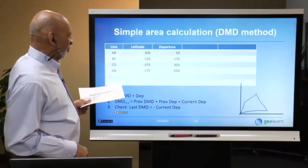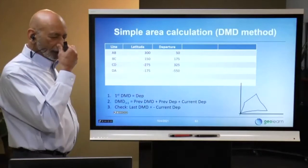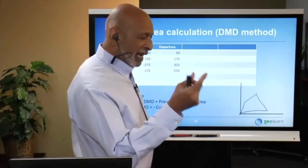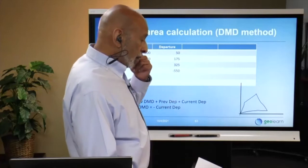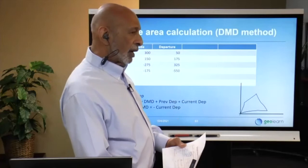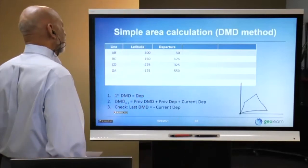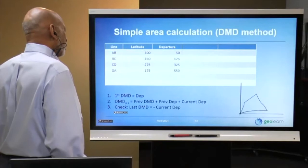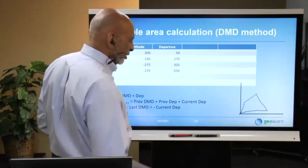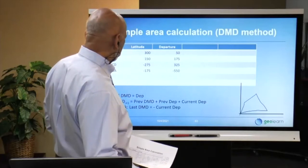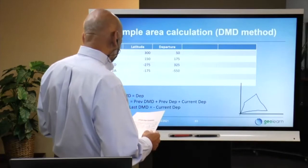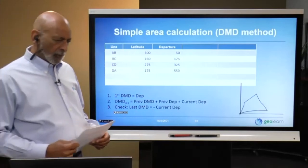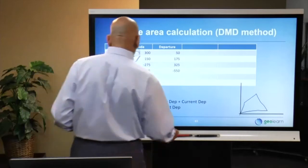When you have a large, complicated traverse and want to verify your area calculation, you can use the DMD method — double meridian distance — which is covered in all standard surveying textbooks. It's another way to calculate area from latitudes, departures, and DMD values, and serves as a useful cross-check against the coordinate method.